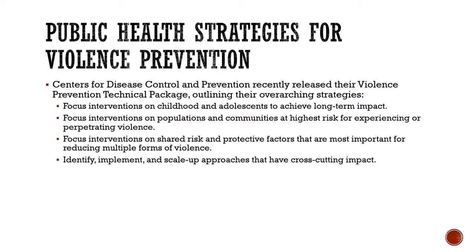The Centers for Disease Control and Prevention recently released, in 2016, their Violence Prevention Technical Package outlining four overarching strategies for violence prevention. These strategies include focusing interventions on childhood and adolescence to achieve long-term impact; focusing on populations and communities at highest risk for experiencing or perpetrating violence; focusing on shared risk and protective factors most important for reducing multiple forms of violence; and identifying, implementing, and scaling up approaches that have cross-cutting impact.